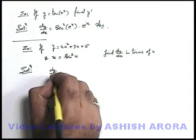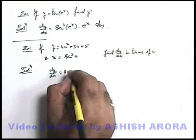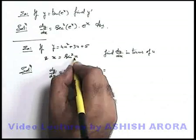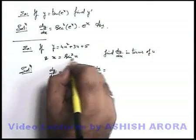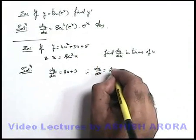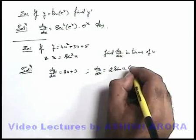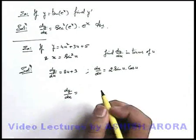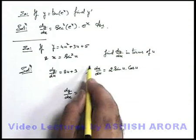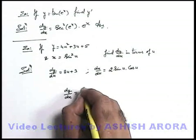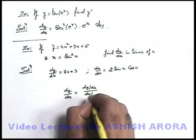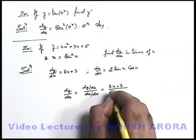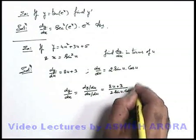I can simply get dy/du, which will be 8u plus 3. And from x, I can get dx/du. Differentiating sine squared u — taking sine u as t, it becomes t squared; the differentiation of t squared is 2t, that is 2 sine u, into the differentiation of t, which is cos u. So dx/du is 2 sine u cos u. Now to calculate dy/dx, I simply divide: dy/dx equals dy/du divided by dx/du, which is (8u plus 3) upon (2 sine u into cos u). This is the result.